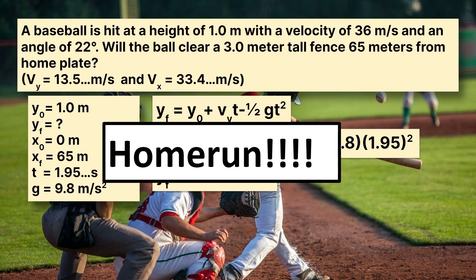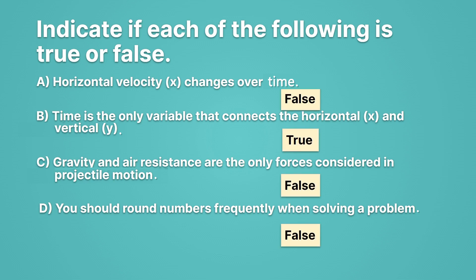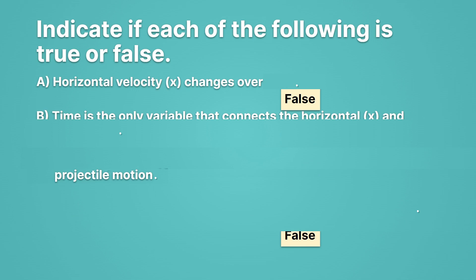One last set of practice problems. Indicate if each statement is true or false. A: the horizontal velocity changes over time — that's false, it stays the same. B: time is the only variable that connects the horizontal and vertical — that's true. C: gravity and air resistance are the only forces considered in projectile motion — that's false, we ignored air resistance. D: you should round numbers frequently when solving a problem — that's false, keep them all in your calculator.